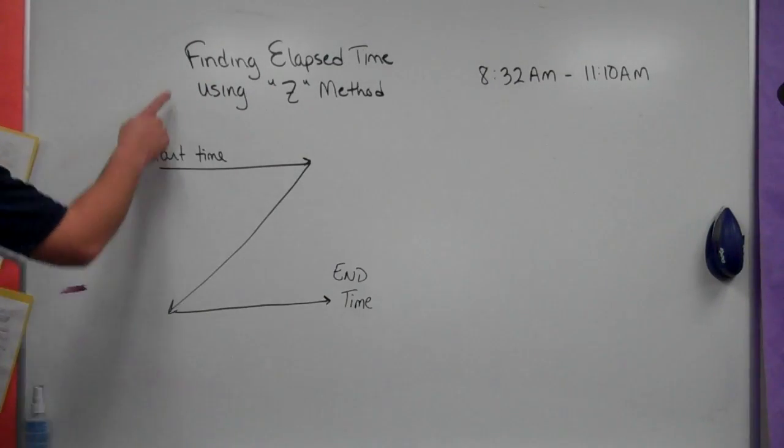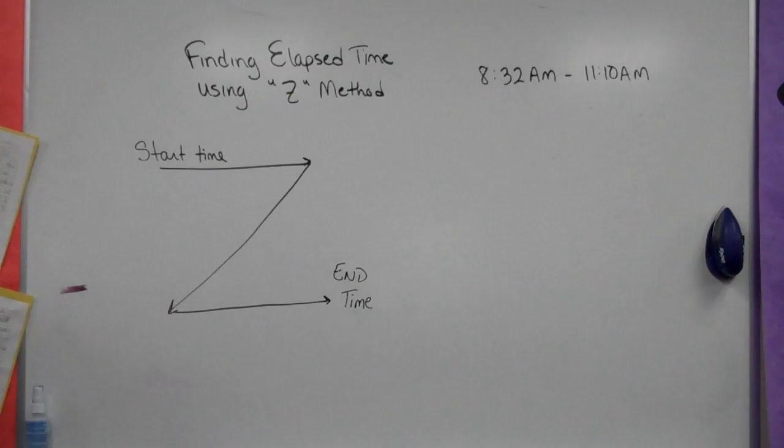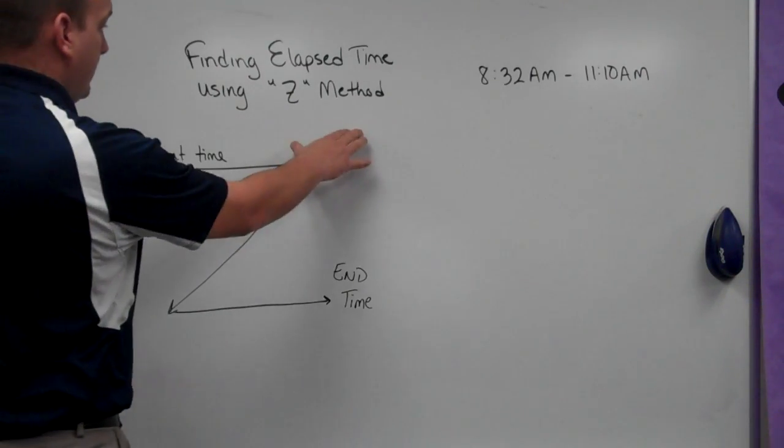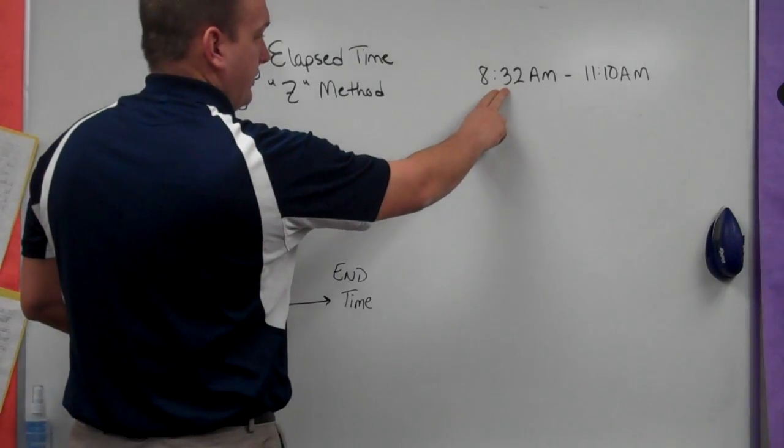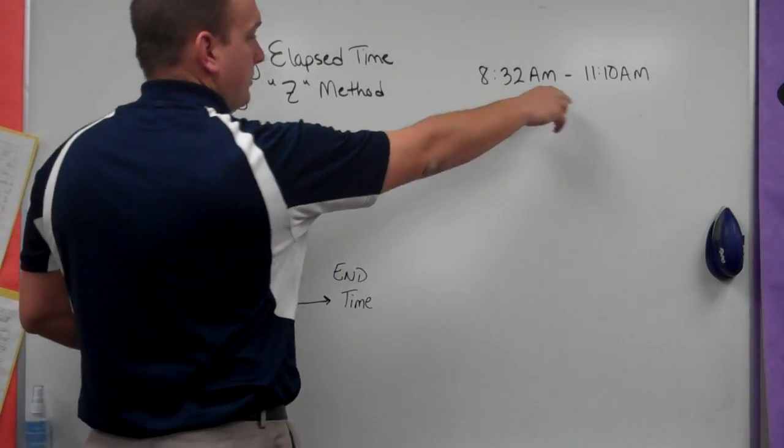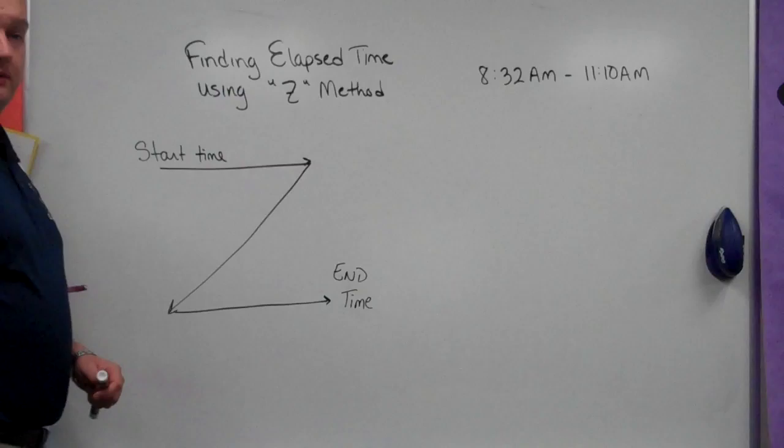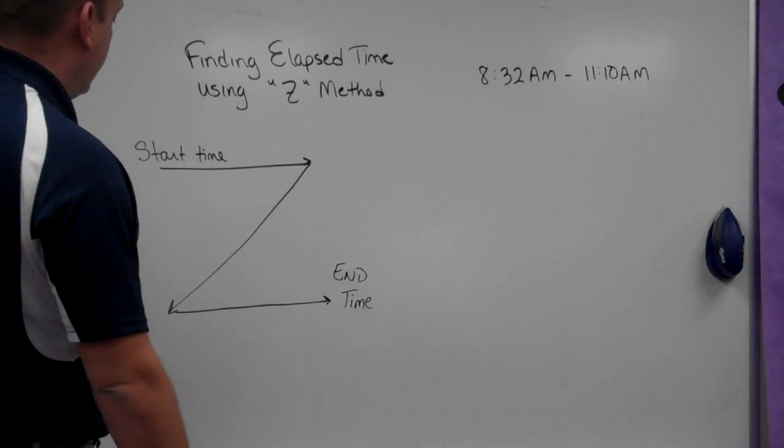All right, today we're going to be finding elapsed time by using the Z method, and this is a very easy way to figure out how much time has passed. I have an example for us over here. If our start time is 8:32, we want to find out how much time has passed if we go to 11:10 a.m.